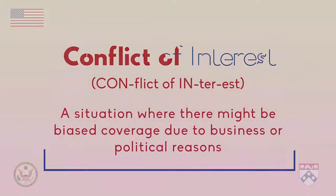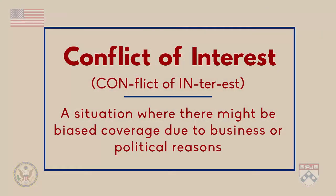Now that we've looked at two types of bias by omission, you might wonder why this situation happens. One reason is when media companies have a conflict of interest. When we talk about media, a conflict of interest is a situation where there might be biased coverage due to business or political reasons.